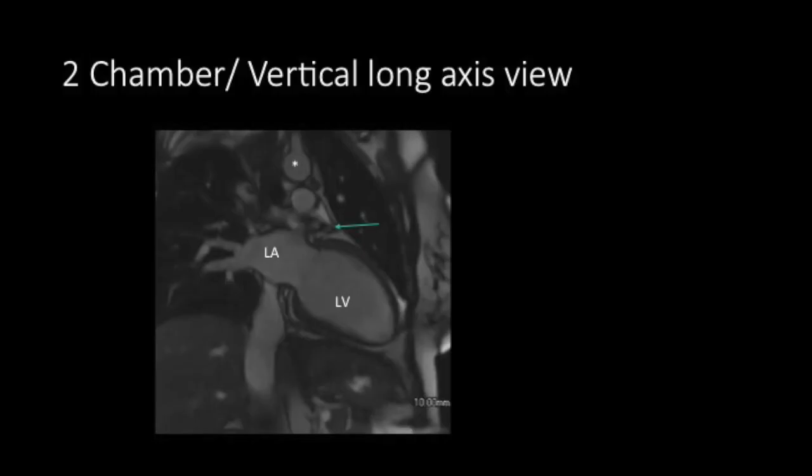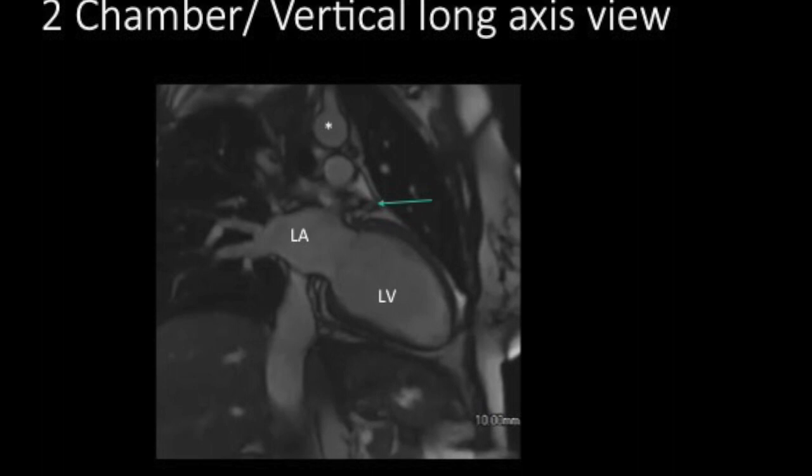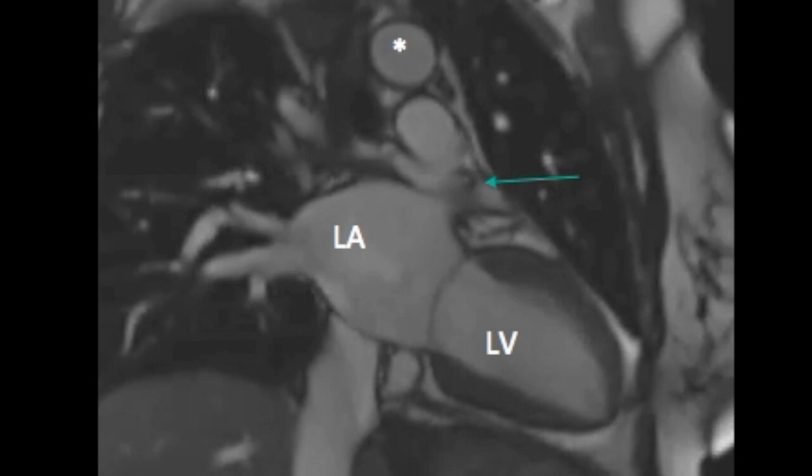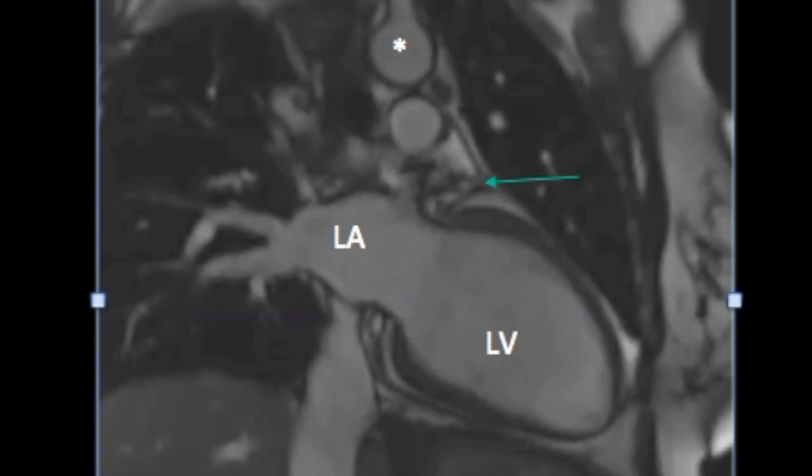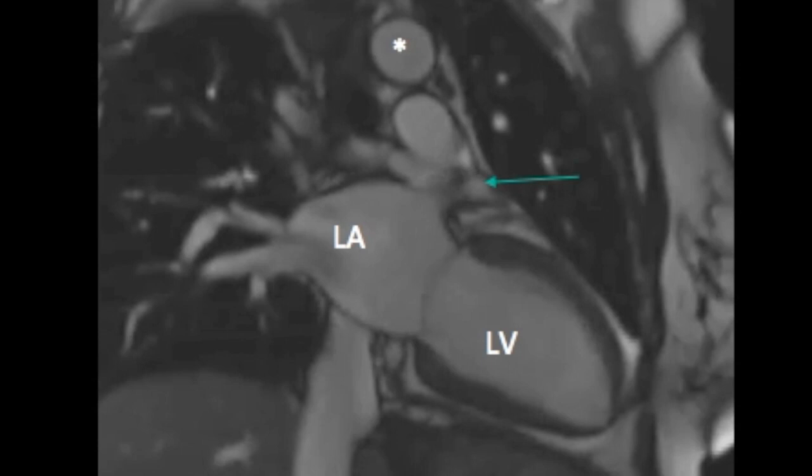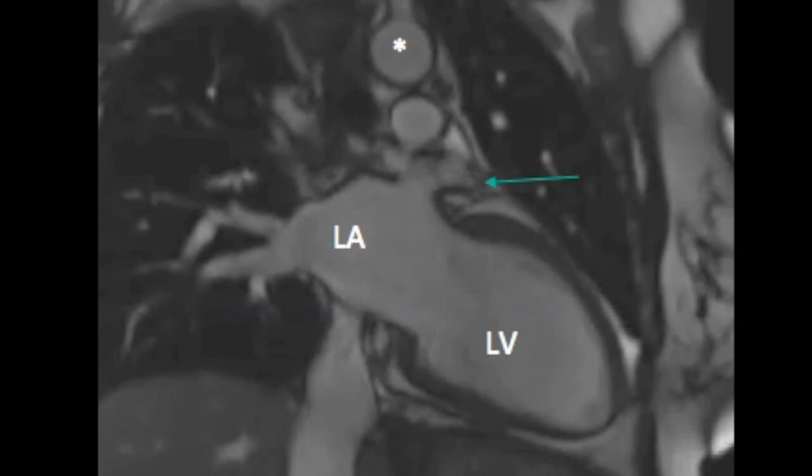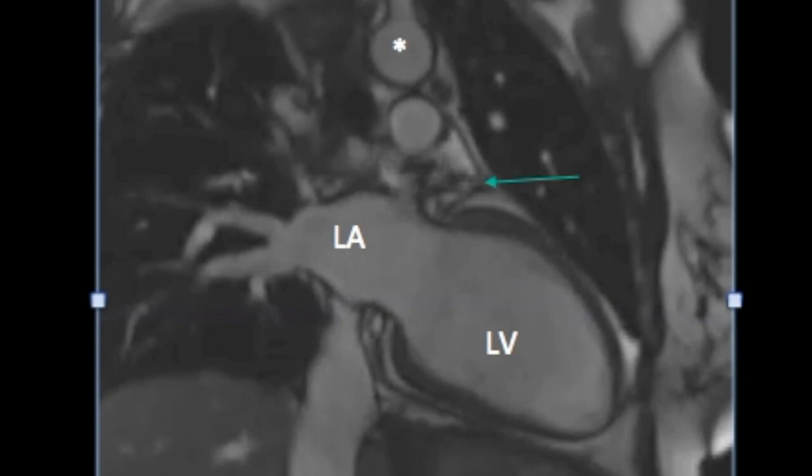Now let us look at the two chamber or the vertical long axis view. This view is obtained to look at the left atrium and the left ventricle. We can see the pulmonary veins draining into the left atrium. We can see the anterior and the inferior wall of the left ventricle. We can assess the wall thickness and the motion or any wall motion abnormality or the contractility of the left ventricle. We can also look at the mitral valve in between the left atrium and left ventricle and look for any valvular pathology.